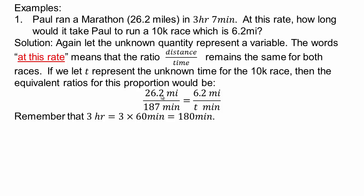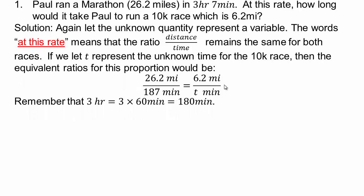So 26.2 miles in 187 minutes. 6.2 miles, we don't know how long, so we'll have to call T as our variable. T represents how long it will take him to run 10k race. When you're setting up proportions, it's very important to pay attention to units. If you put miles on numerator and minutes on the denominator on one side, you have to do the same with the other units. This will allow you to set up correct proportions.